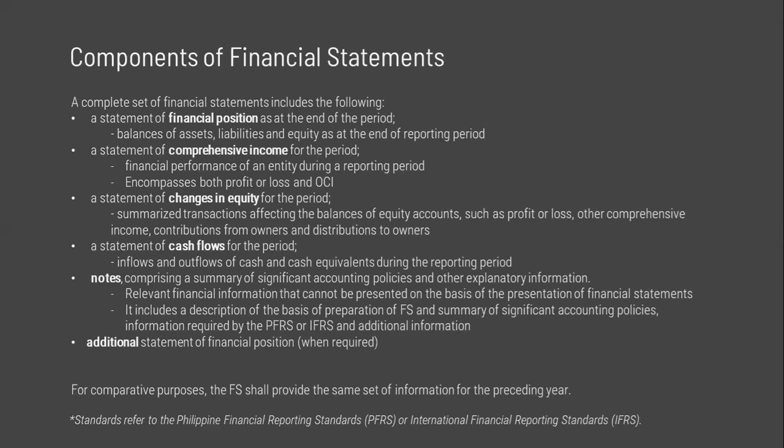The operating cycle of an entity is the time between the acquisition of assets for processing and their realization in cash or cash equivalents. When the entity's normal operating cycle is not clearly identifiable, it is assumed to be 12 months. Assets and liabilities realized or settled as part of the entity's normal operating cycle — such as trade receivables, inventory, trade payables, and some accruals — are presented as current even if expected to be realized or settled beyond 12 months. Non-operating assets and liabilities are presented as current only when expected to be realized or settled within 12 months. Deferred tax assets and liabilities are always presented as non-current items in a classified statement of financial position, regardless of their expected dates of reversal.